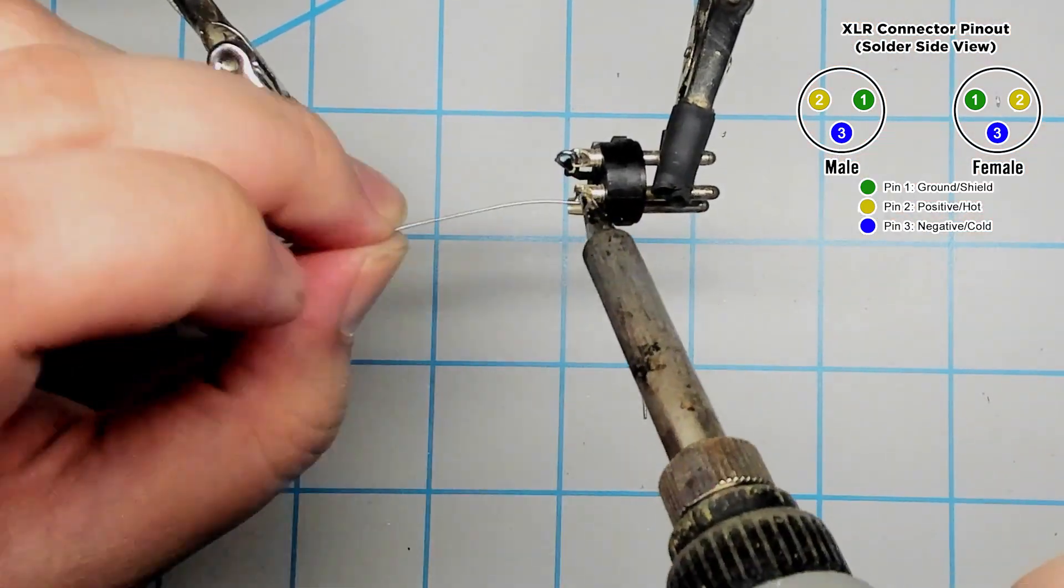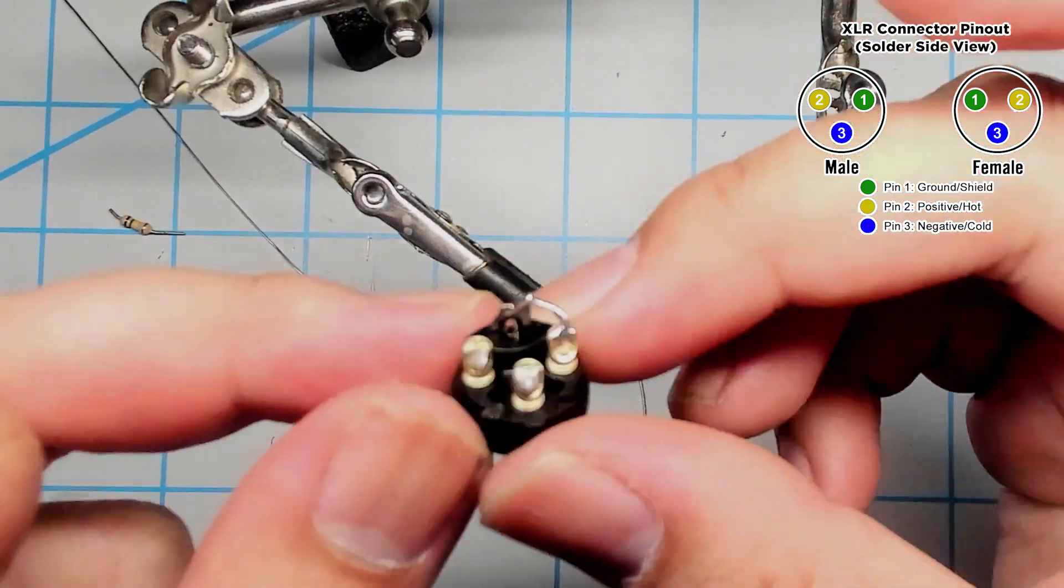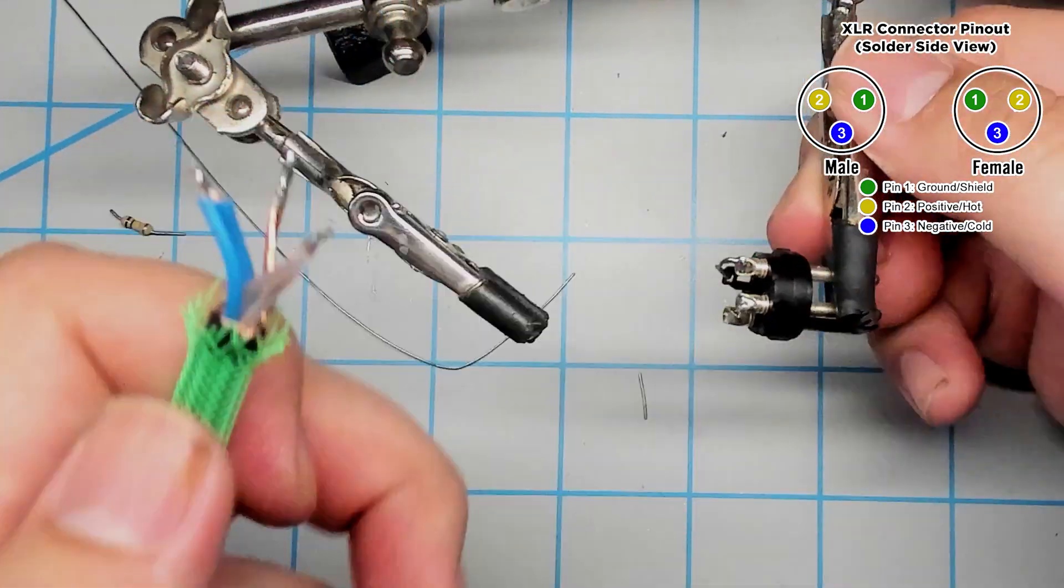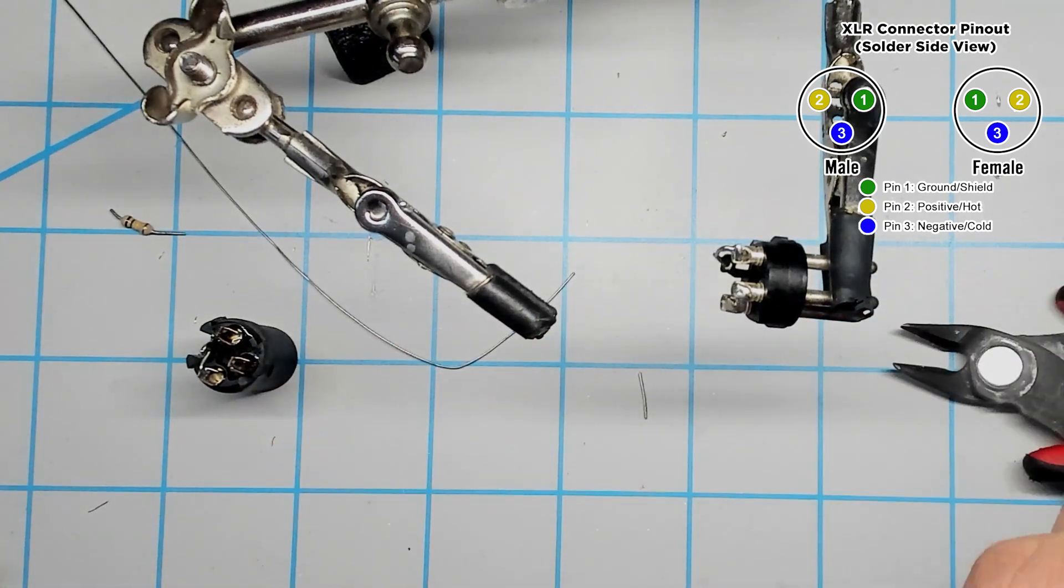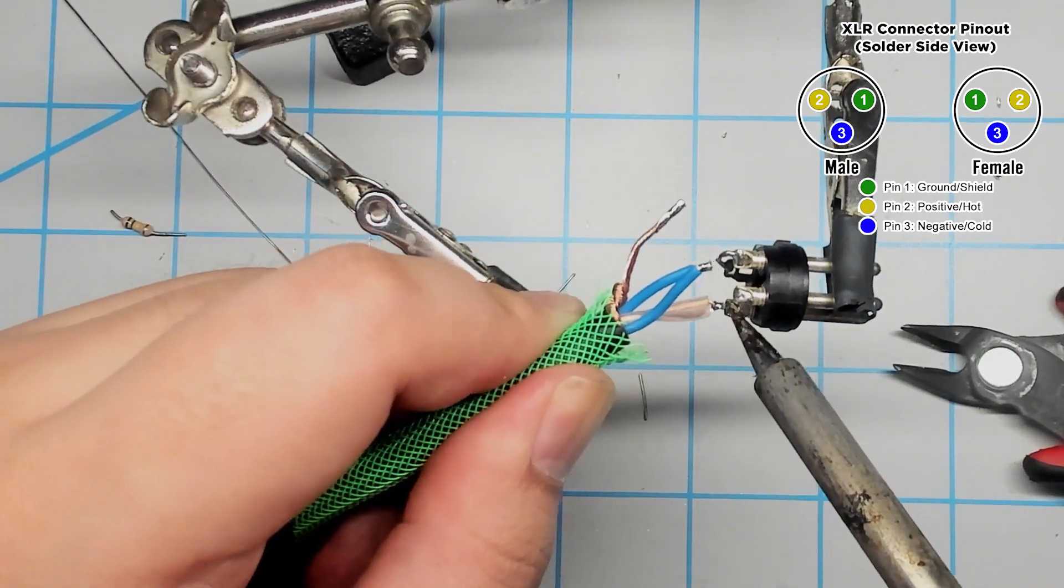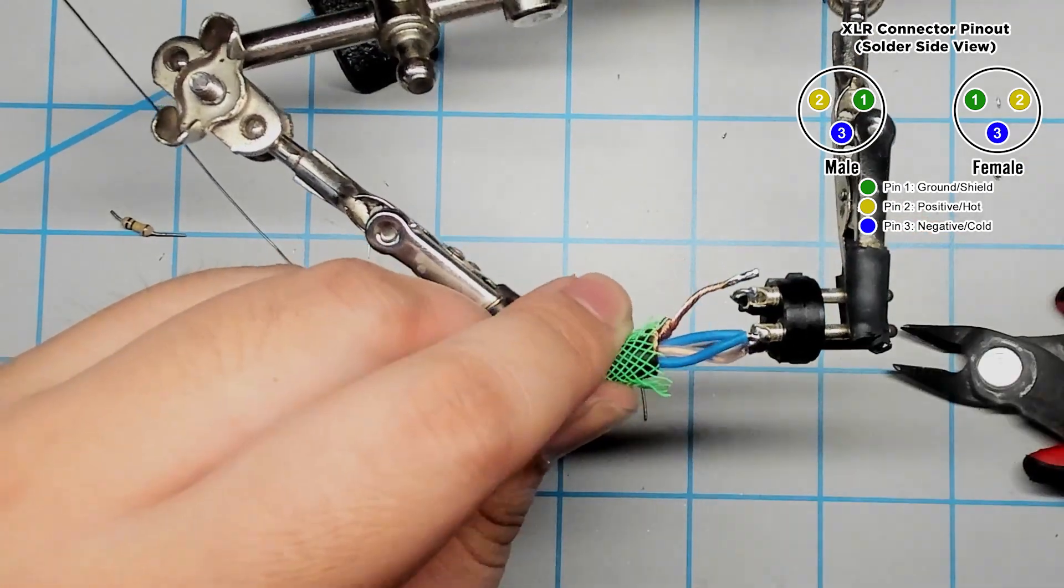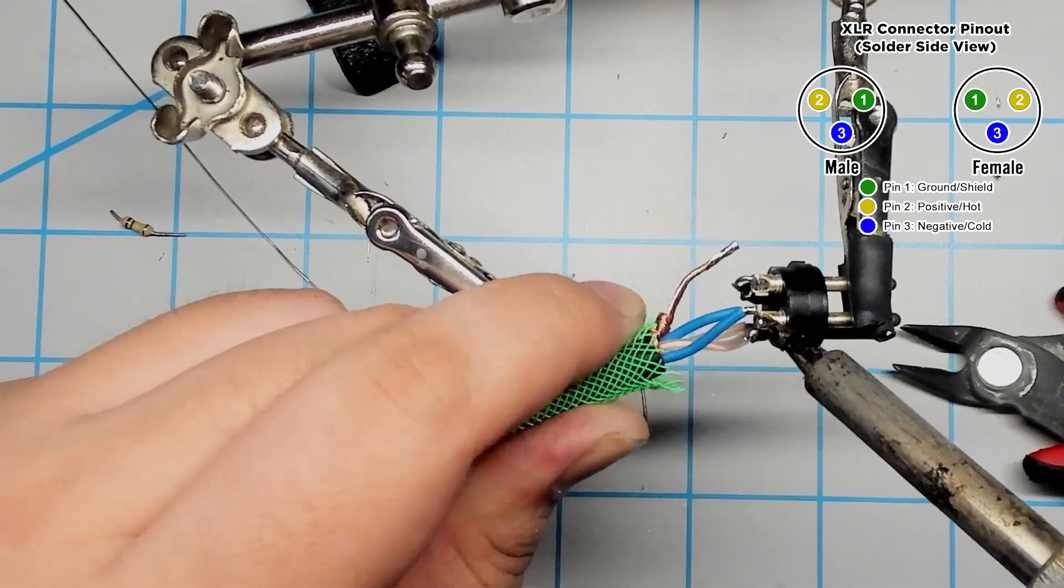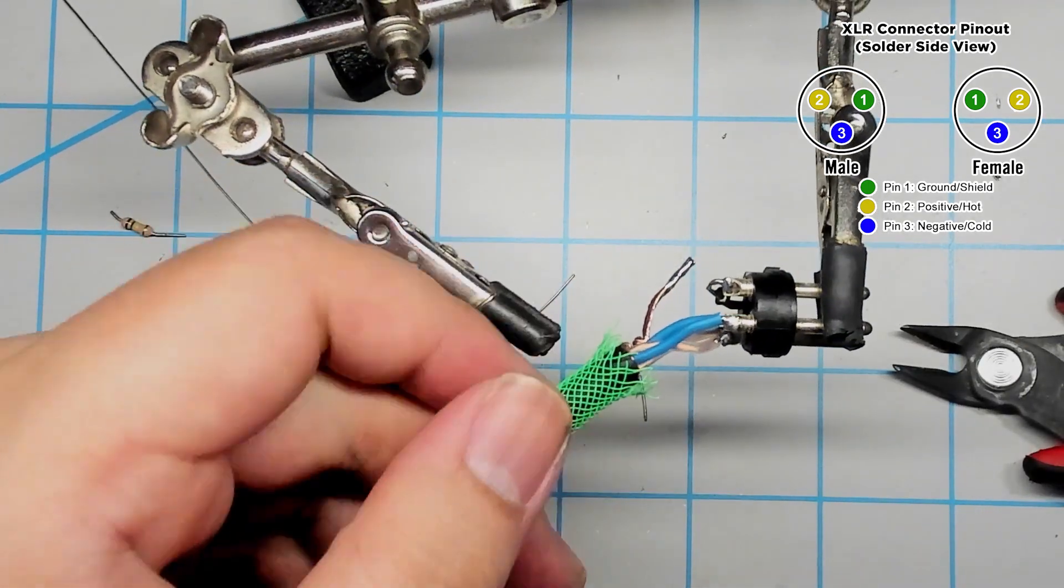And now we can finally get to soldering everything together. Before I get started, I decided to trim down the wires just a little bit more to make them fit better into the solder cups. As with any cable soldering, you really do want to minimize the amount of exposed wire to prevent any unwanted signal contact. I'll go ahead and follow the pinout and solder everything into place.